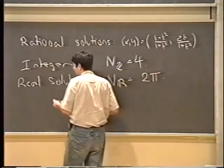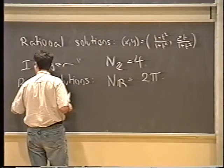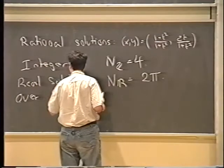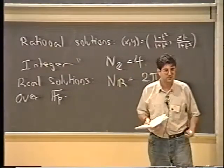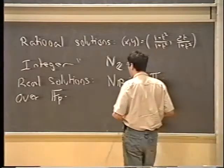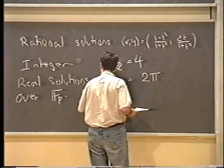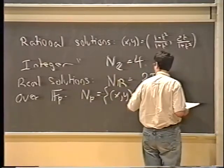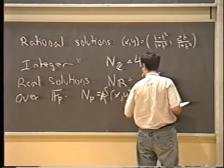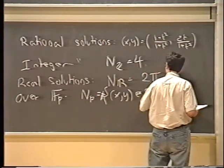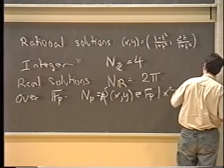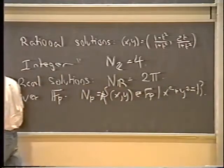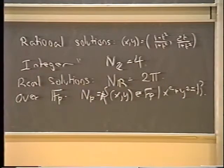Another thing one can do is consider the solutions to this equation over the various finite fields with p elements. The solution set is simply a finite set, and I'll define N_p to be the cardinality of the solutions over 𝔽_p — the order of the set of (x, y) in 𝔽_p such that x² + y² = 1. You might ask for a formula for this N_p.